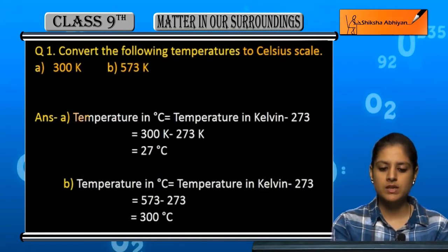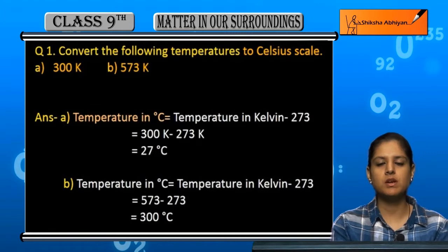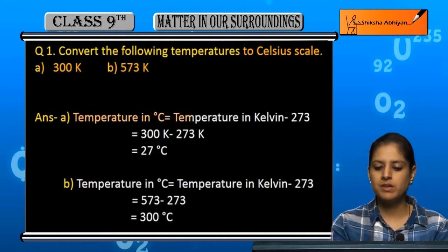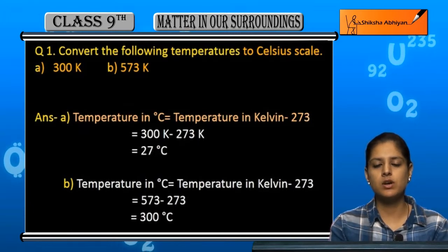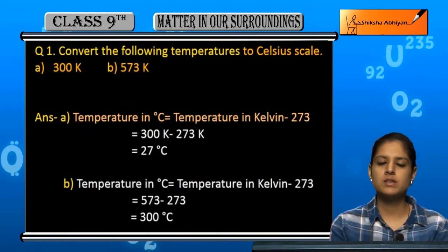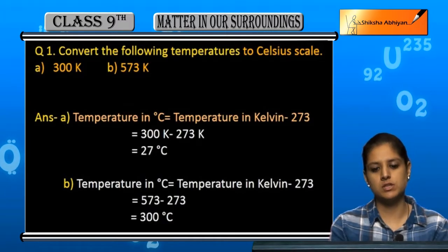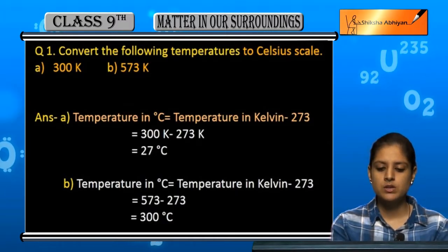If we look at the formula for any temperature to convert to Celsius scale: temperature in Celsius equals temperature in Kelvin minus 273. So first is 300 Kelvin.